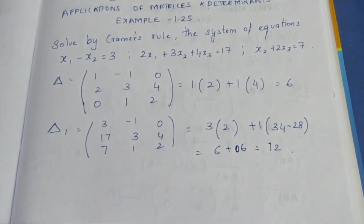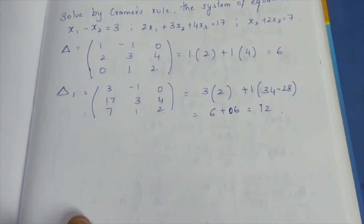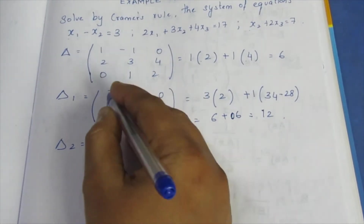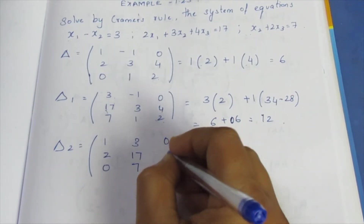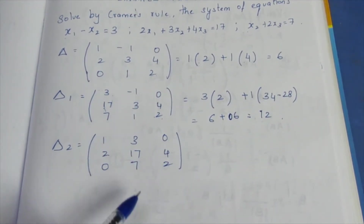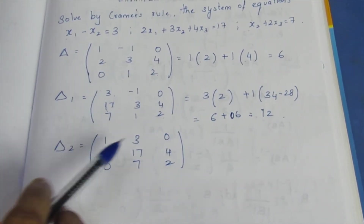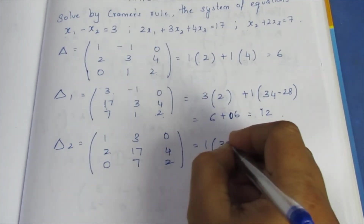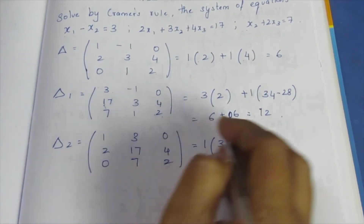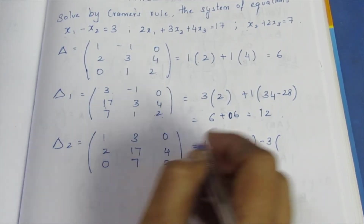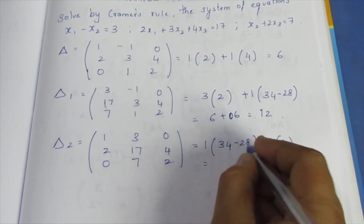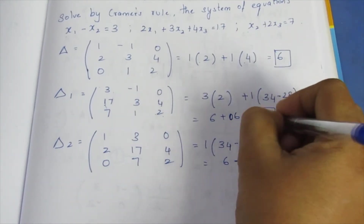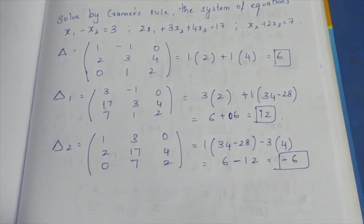Determinant D2 is defined. D2 uses the second column replaced by constants. The matrix has first column 1, 2, 0; second column replaced by 3, 17, 7; third column 3, 1, 2. Row and column multiply: 34 minus 28, then minus 3 times row and column gives 0, so we get minus 12, giving determinant D2 equal to minus 6.